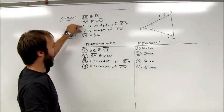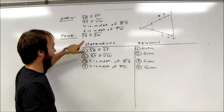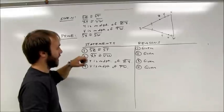I'm told that I have midpoints. Y and V are both midpoints. And I want to show that SX is congruent to SW.